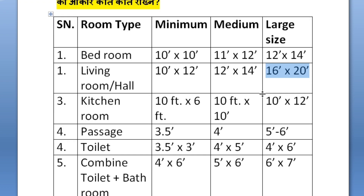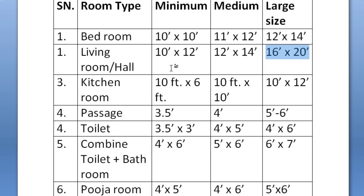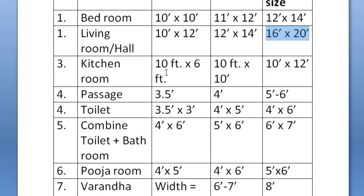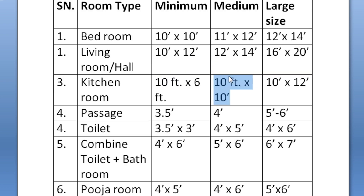So we have to do the kitchen size inside the living room. All the levels are: minimum is 6 feet by 10 feet, and medium is 10 feet by 10 feet. So we have to do the dining room inside the kitchen plus dining room.